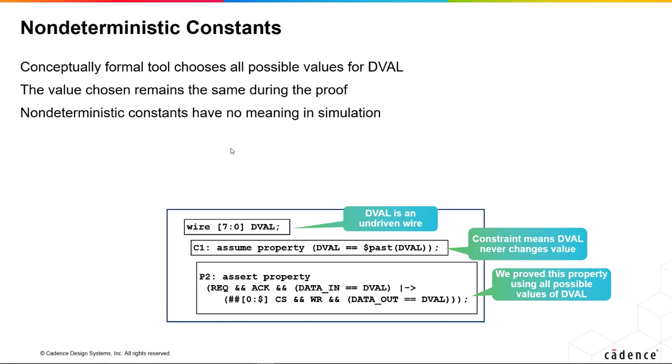Now the important thing about this in formal is that we've defined here a non-deterministic constant. We've said something whose value never changes, but we haven't said what value it is. So in formal, what that means is conceptually we've tried every possible value for data_in, every possible value allowed by these 8 bits.